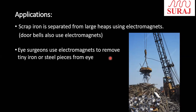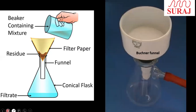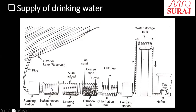In the last class, we also discussed the supply of drinking water and the processes involved. Let's look at that process again. We discussed the pumping station and the important topics — what was happening at each stage.